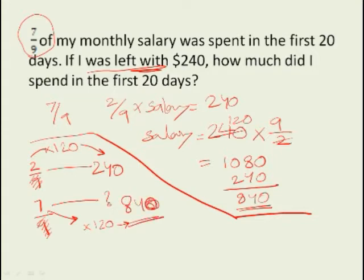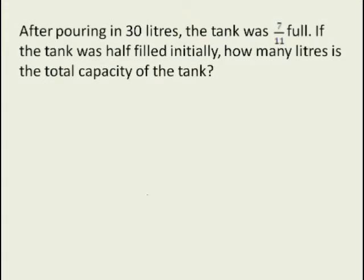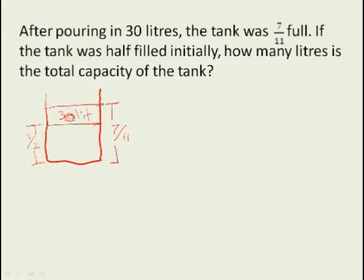So there's a much quicker way of finding out the answer to this question. Let's do another one. Now this is a harder question. After pouring in 30 liters, the tank was 7 by 11 full. If the tank was half filled initially, how many liters is the total capacity of the tank? So we'll have to first understand what the question is. This is a tank, it was already half filled, and then after pouring in 30 liters, we see now it is 7 by 11.